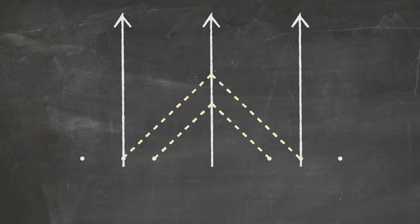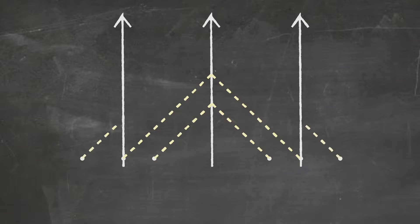They could start from closer distances or from distances that are further away. But if a light signal sent from a pair of events arrives at the midpoint at the same instant, then those two events happen at the same time.